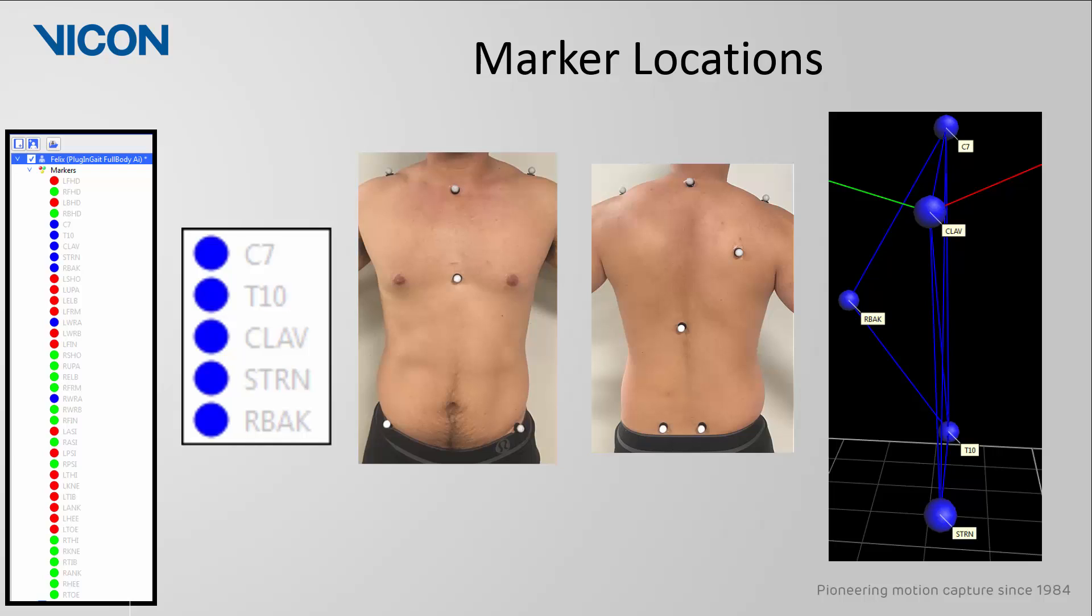On the anterior thorax, there is a clavicle marker, which will be placed at the jugular notch where the clavicle meets the sternum, and a sternum marker, which will be located on the xiphoid process.